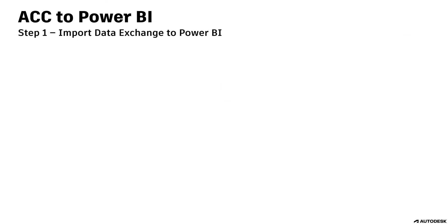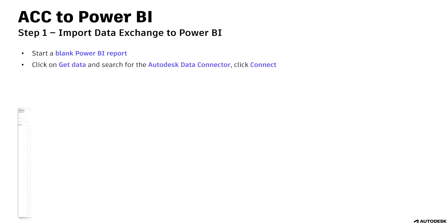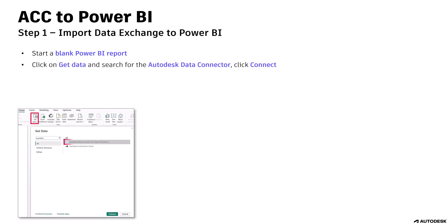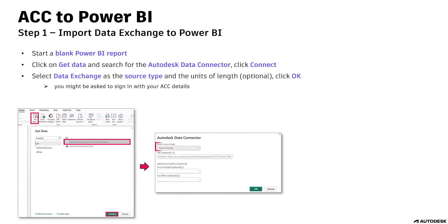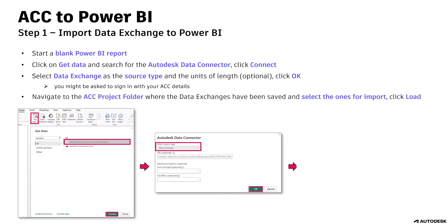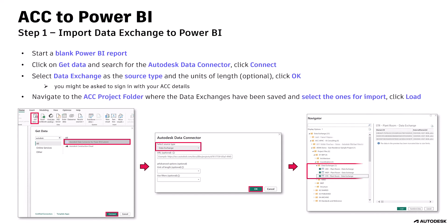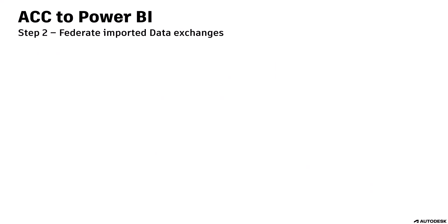Step 1: import the data exchange to Power BI. Start a blank Power BI report. Click on Get Data and search for the Autodesk Data Connector. Click Connect. Select Data Exchange as the source type and, if desired, the units of length. Click OK. Navigate to the ACC project folder where the data exchanges have been saved and select the ones for import. Click Load.